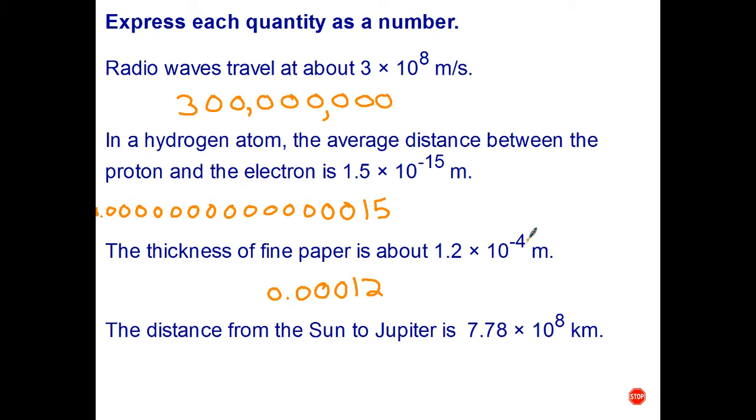Last question: the distance from the Sun to Jupiter is 7.78 times 10 to the 8th kilometers. We'll rewrite the 7.78, and I've got to move my decimal point eight places: one, two, three, four, five, six, seven, eight. And that gives us 778 million kilometers.